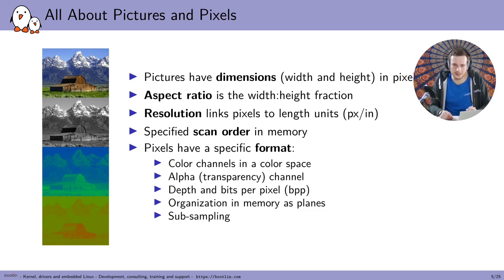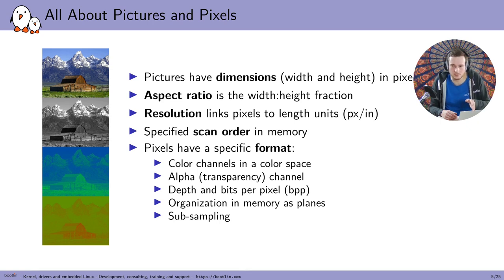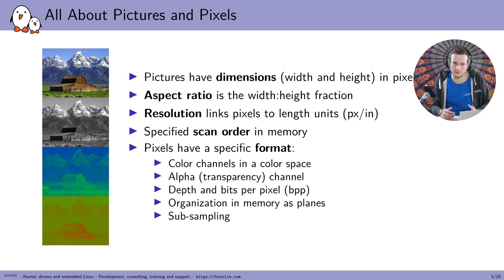Another important aspect is how each color channel is organized in memory. In RGB, it's common to have the red information, then green, then blue in memory, repeating for every pixel. But it's also possible to have all the reds, then all the greens, then all the blues — a planar layout. Knowing this organization is quite important if you want to properly decode the picture.